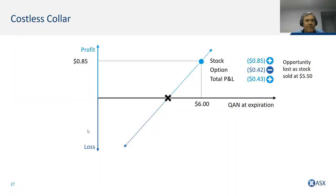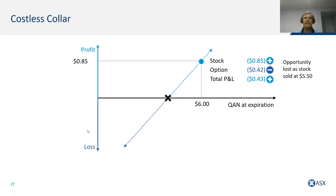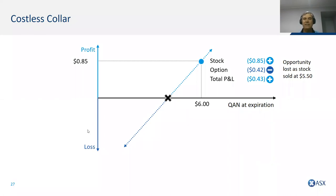How did we determine the $4.90 and $5.50 exercise prices? Qantas was at $5.15 — we were comfortable with a 5% fall before protection kicked in, like an insurance policy excess. 5% below $5.15 is $0.25, so $4.90 on the downside. For the $5.50 call — yes, it's $0.35 above rather than $0.25 — on the call side we're looking for the option value that offsets the cost of the put to make it a costless collar. In this case $0.33 more than offset our costs and gave a little extra, so that's why we chose the $5.50 strike.